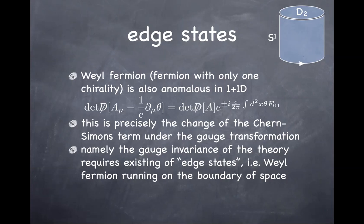The line of argument is exactly the same: the theory has to be gauge invariant. If you see part of the theory which seems to violate gauge invariance, you can predict that there must be additional degrees of freedom that will cancel this anomaly and maintain the overall gauge invariance of the system.